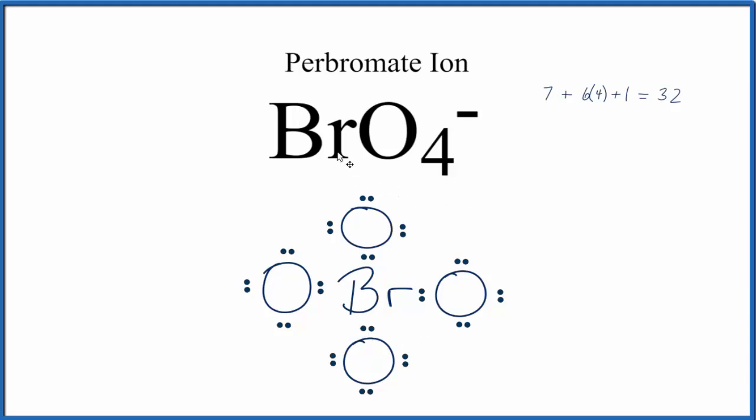And that makes this the Lewis structure for BrO4-. There is one last thing we need to do, and that's to put brackets around this, and a minus sign on the outside to show that it has a negative charge, that it's an ion.